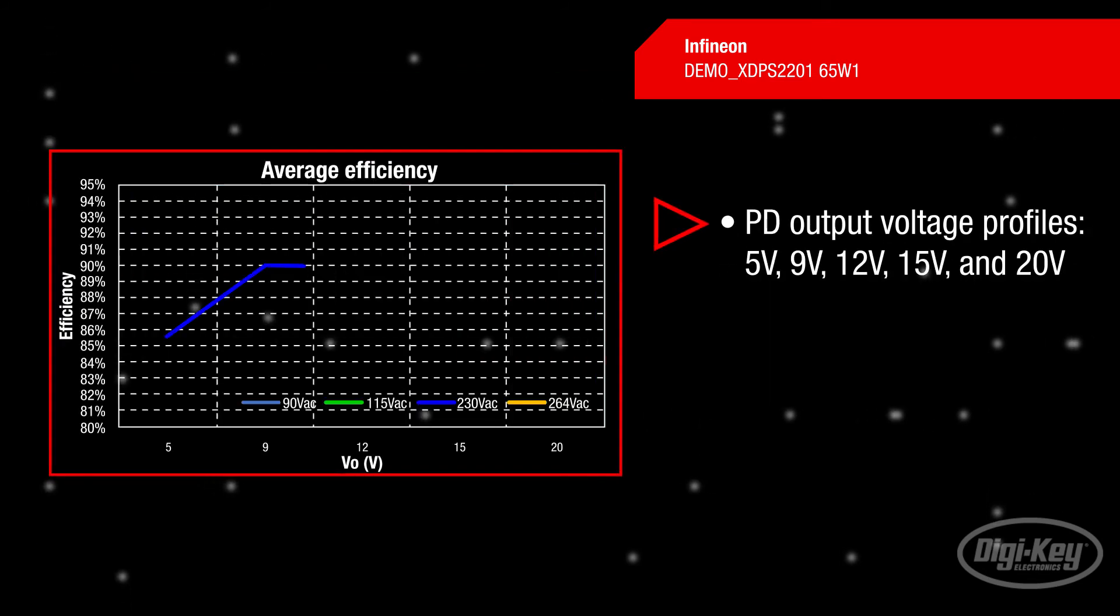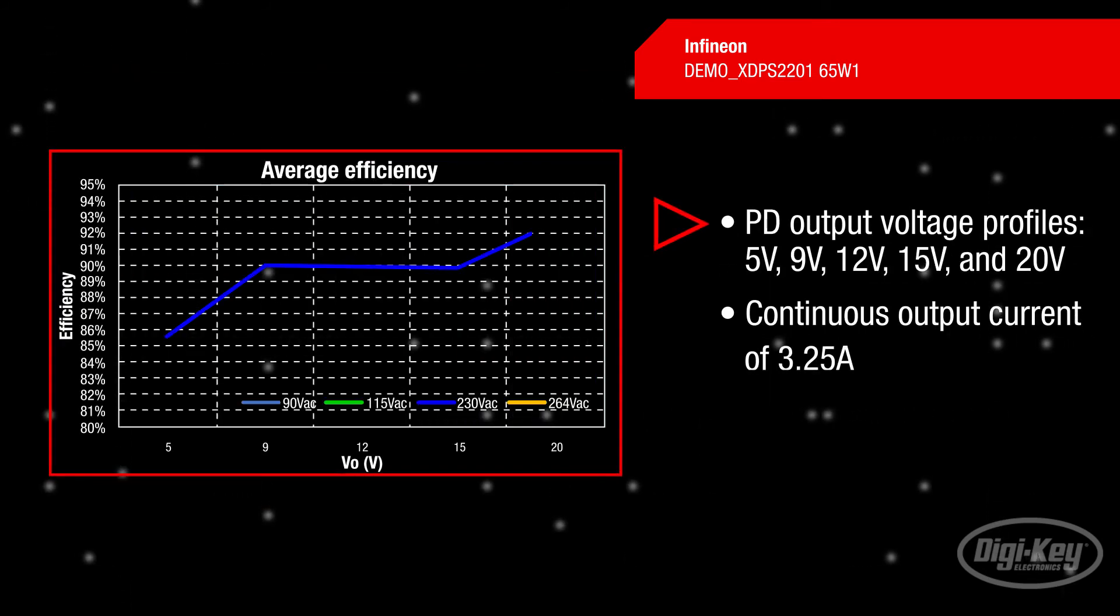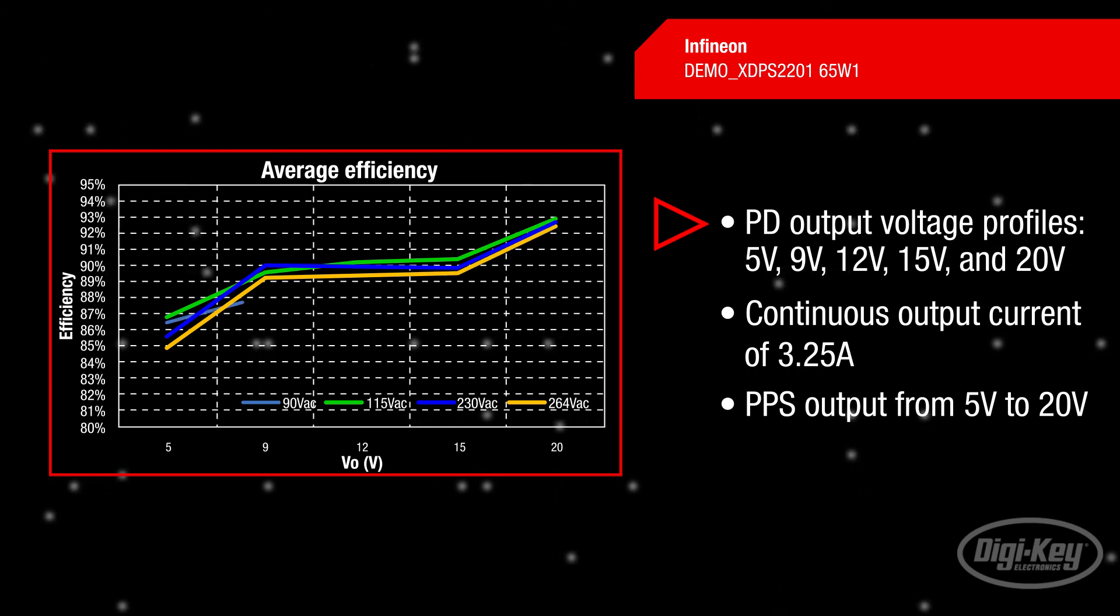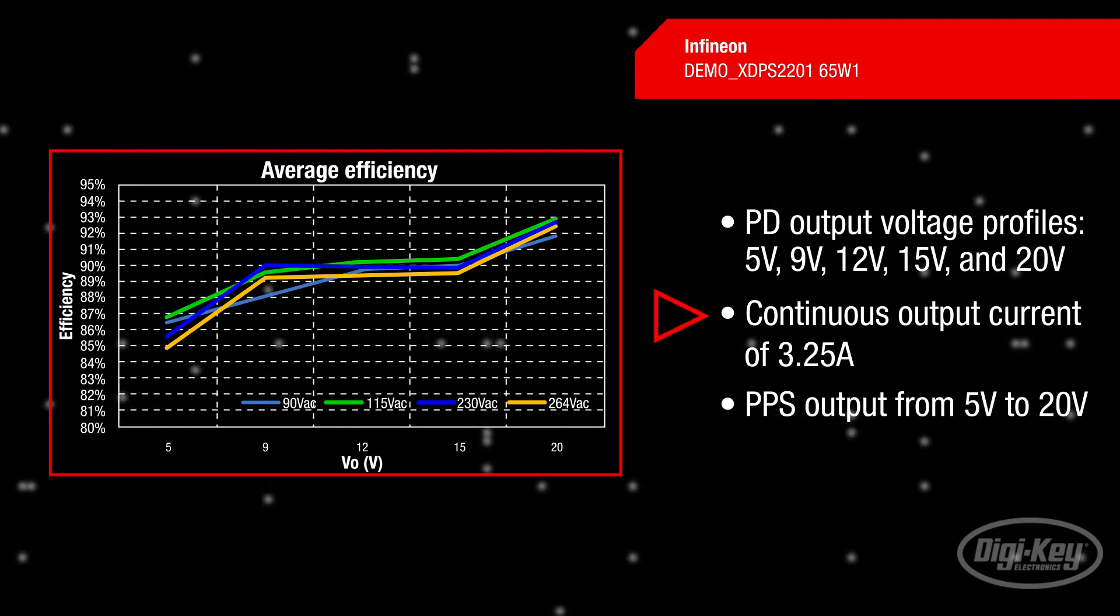The demo XDPS2201-65W1 board is designed for a wide input application and provides PD output voltage profiles of 5V, 9V, 12V, 15V, and 20V, and a nominal continuous output current of 3.25A.